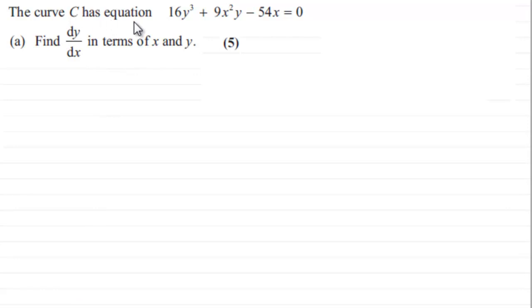We've got this curve C which has an equation 16y³ + 9x²y - 54x = 0, and what we've got to do is find dy/dx in terms of x and y.